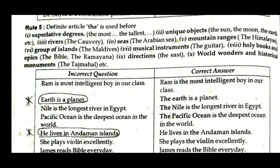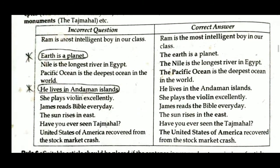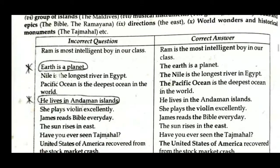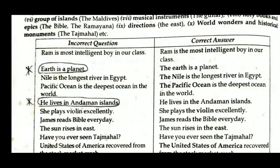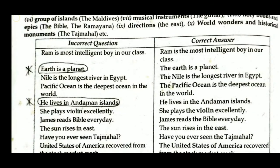'Ram is most intelligent boy in our class' is incorrect. Whenever you have a superlative adjective form, you must use 'The' before it. So 'The' is missing — the correct answer is 'Ram is the most intelligent boy in our class.'